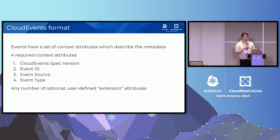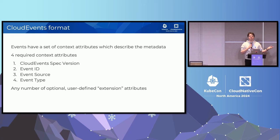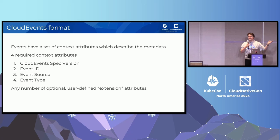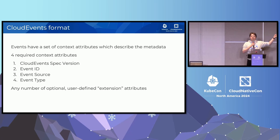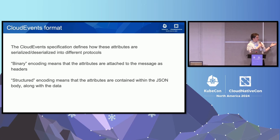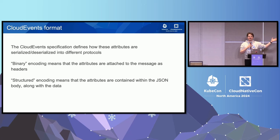Cloud Events works by giving events a set of context attributes that describe the metadata — basically like typed headers for HTTP. There are four required attributes: spec version, ID, source, and type. You can also add any number of optional user-defined attributes to extend it with whatever information you care about. Commonly you might copy a couple of things out of your payload into the context attributes for routing. Beyond defining these attributes, Cloud Events defines how they should be serialized and deserialized into different protocols, which is really where the reduction in complexity in your code comes from.